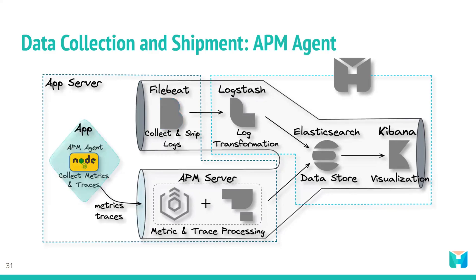For collecting and shipping traces and metrics data, Herald uses Elastic APM agents. APM agents are open source libraries that collect data generated by an application. These agents are written in the same programming language as the application and can be easily installed like any other library. Once installed, the user instruments their code to allow the agents to collect tracing and metrics data. The APM agents then ship the data to the APM server for processing.